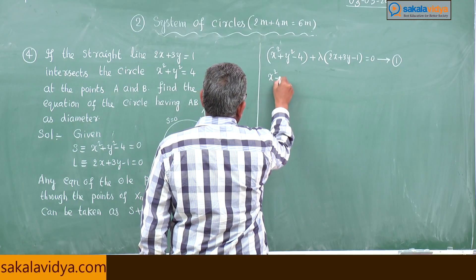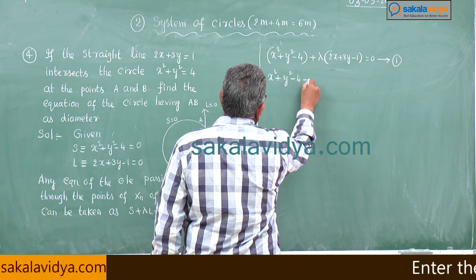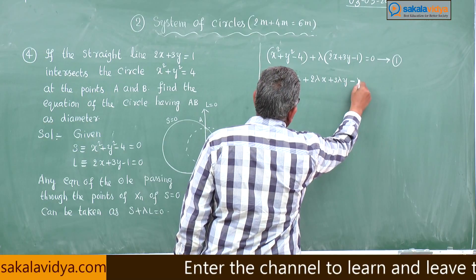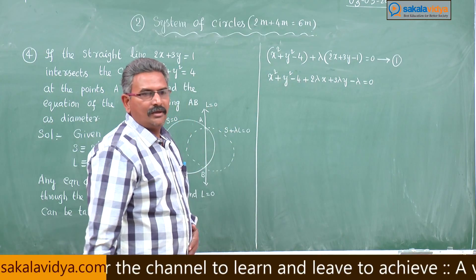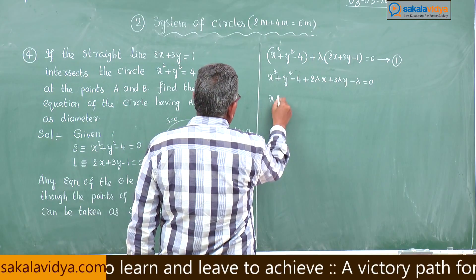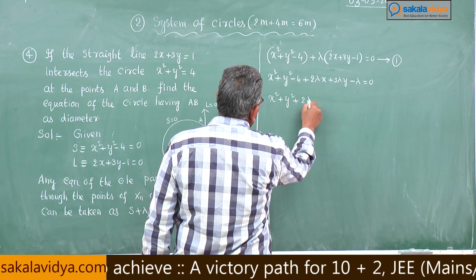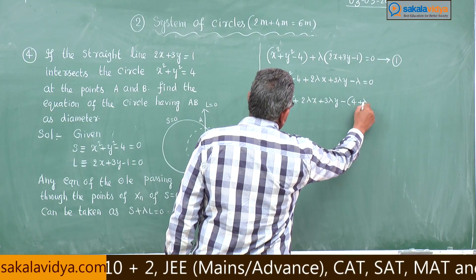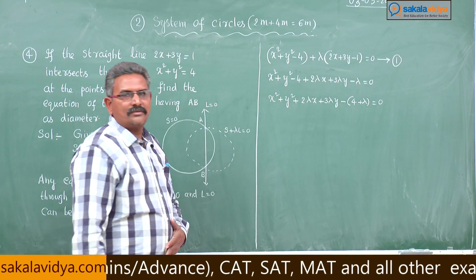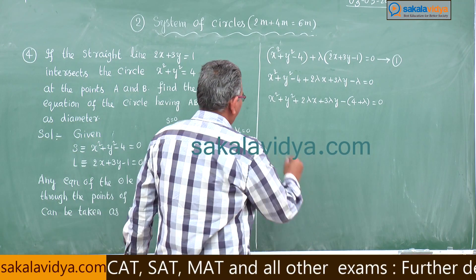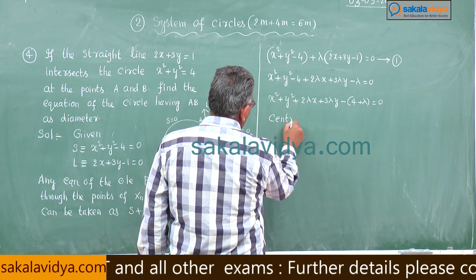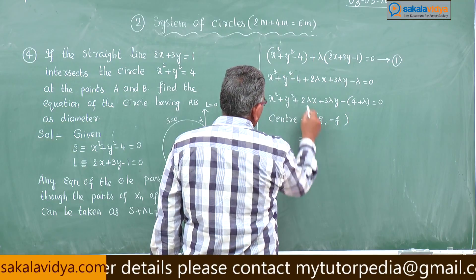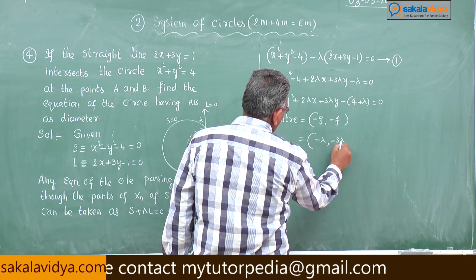This can be written as x² + y² + 2λx + 3λy − (4 + λ) = 0. Now let us find the centre of this circle. Centre = (−g, −f), which gives centre = (−λ, −3λ/2).